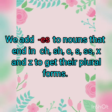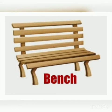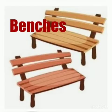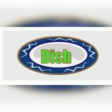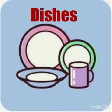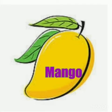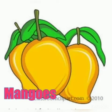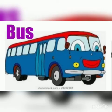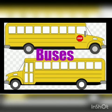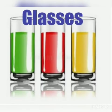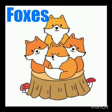We add es to nouns that end in ch, sh, h, o, s, double s, x, and z to get their plural forms. For example: bench → benches, dish → dishes, mango → mangoes, bus → buses, glass → glasses, fox → foxes.